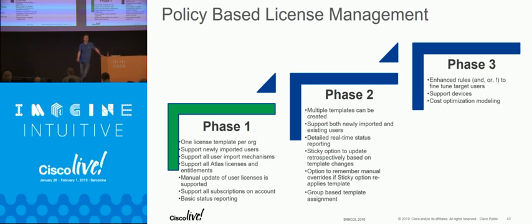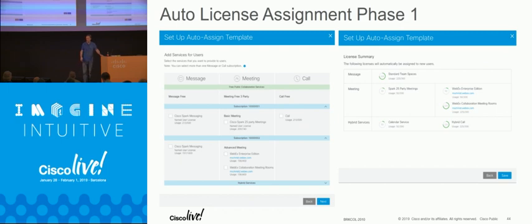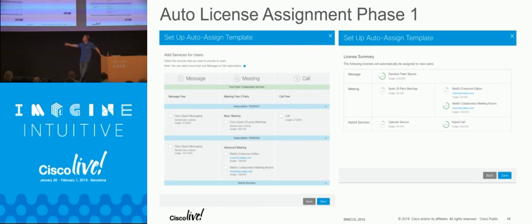Today, you get an account and a default entitlement such as messaging and WebEx, and you can make that default whatever you want. If you go to our collab help site and look at auto license assignment, this is just an example of a user by default being given messaging, meetings, and hybrid services access. You can make that as much or as little as you want — here's where you control whether they get a WebEx meetings license by default. You can always go back in and change it after the account is created.